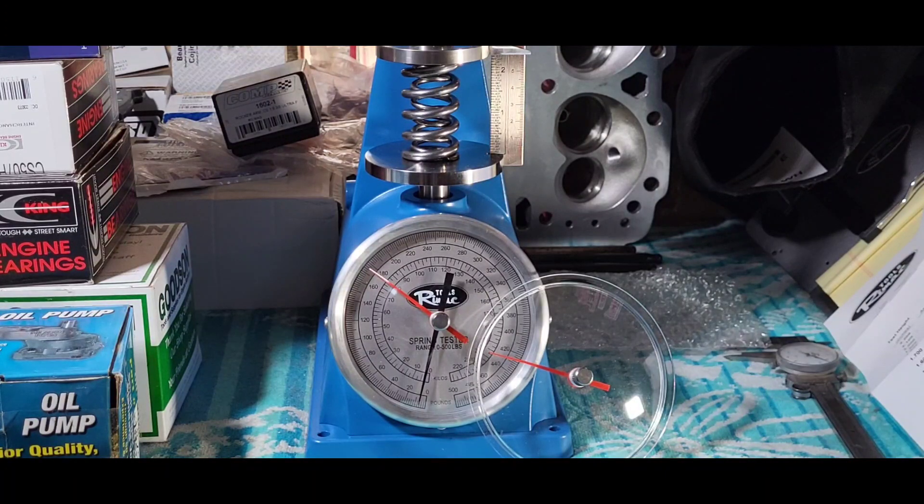And I bought a new calibration spring from Remac. It came with a sheet, a calibration sheet. At two inches, outer spring should read 137.1. It reads 121. Inner spring, at two inches, 73. It reads 62.